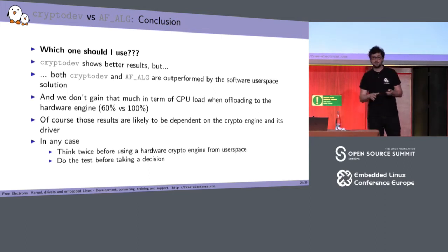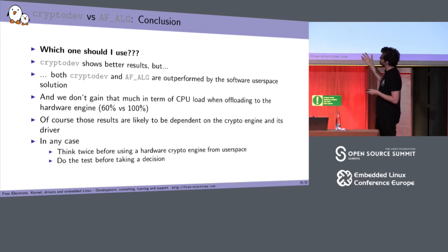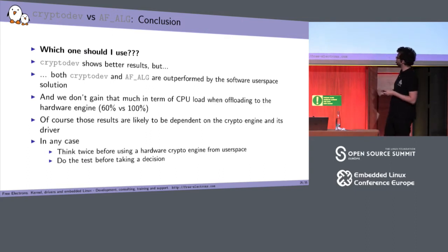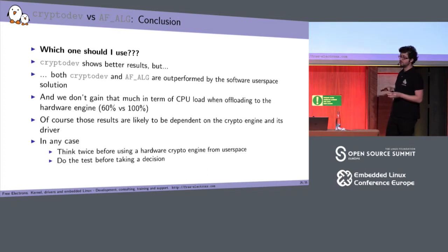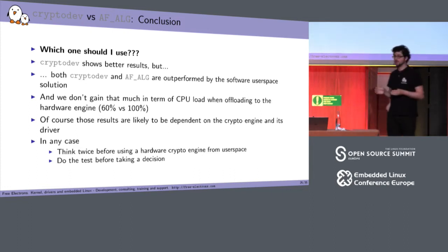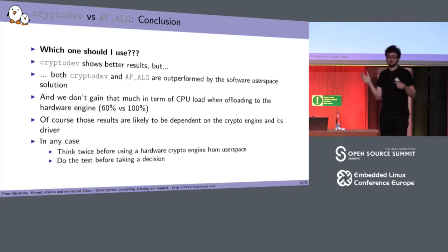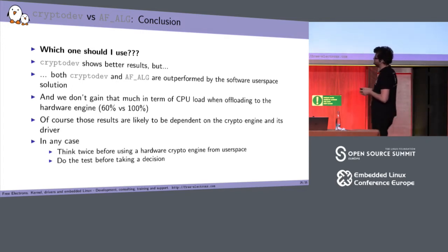I also looked at CPU consumption because when using a hardware engine, one of the goals is to offload the CPU. Even the version using the hardware engine uses quite a lot of CPU — around 60% compared to 100% for the pure software implementation. So in most cases I don't think it makes sense to use your hardware engine from userspace. The only case where it might be interesting is when you have a lot of parallel requests. Otherwise, think twice before trying to use hardware engines from userspace.